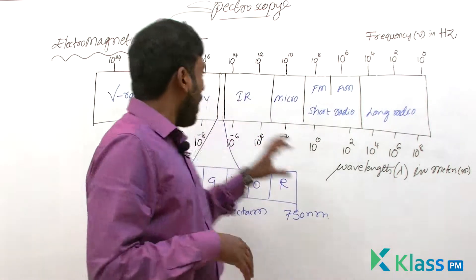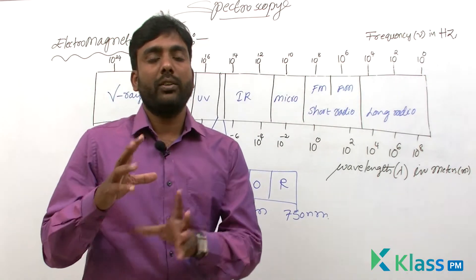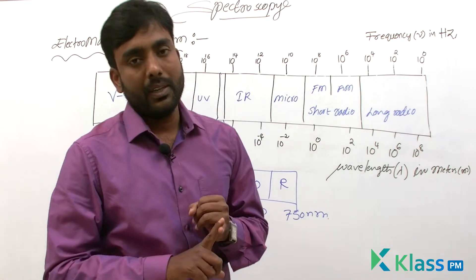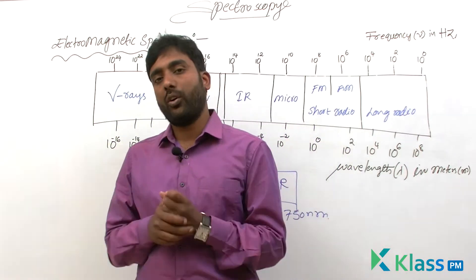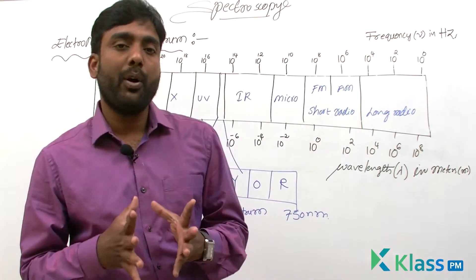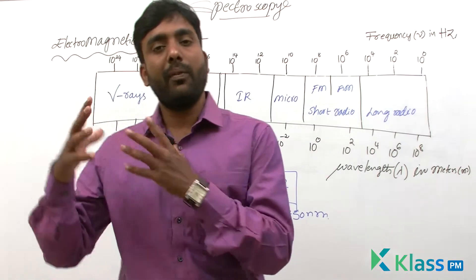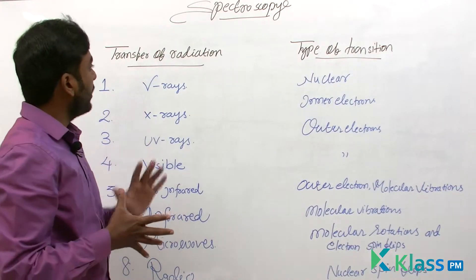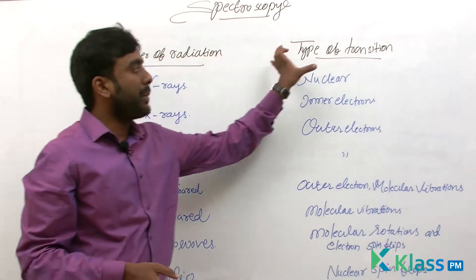Now we will see how these different electromagnetic radiations cause different changes in substances. Some cause nuclear changes, some cause outer electron changes, some cause inner electron changes. Which type of radiation causes which kind of transition — we will see that in the next table. Here, this column shows the type of radiation and this column shows the type of transition that occurs in a substance.